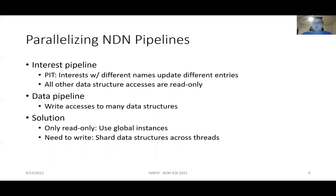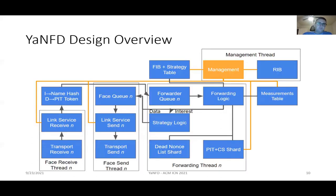How do we actually accomplish multi-threading by parallelizing the NDN forwarding pipelines? The interest pipeline features one write to a data structure — the PIT, the pending interest table. However, interests with different names will not update the same PIT entry, so we don't have to worry about two entries being updated simultaneously for the same name. All other data structure accesses in the interest pipeline are read-only. On the data pipeline, there are many more write accesses to data structures. The solution is to use global instances of data structures that can be used read-only, and shard data structures across threads when modification is needed in the forwarding process.